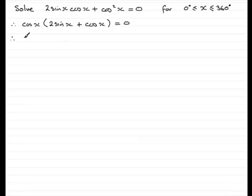So what that means is I can either say that this factor, cos x equals 0, or I can say that the other factor here, 2 sine x plus cos x, that that equals 0.